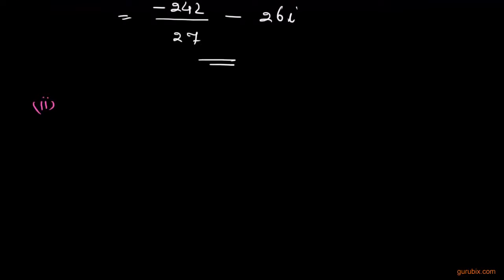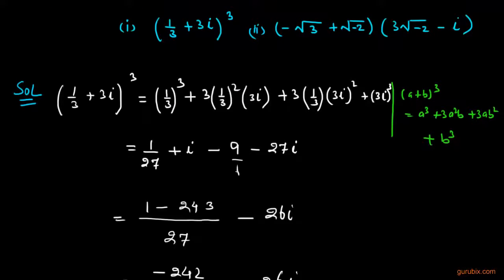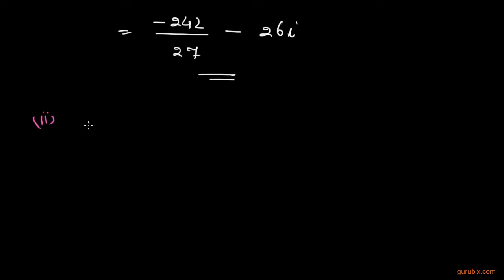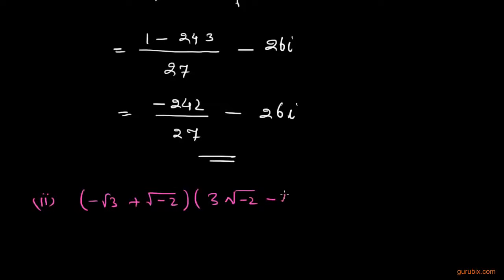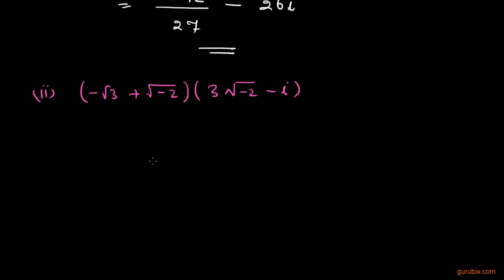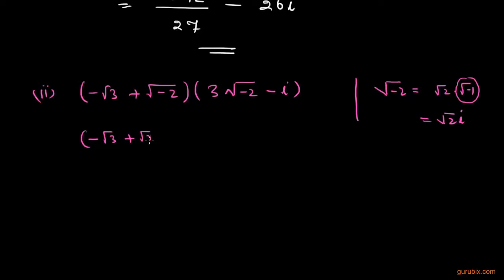Now we move to part 2. In part 2 we are given the expression: negative root 3 plus square root of negative 2, multiplied by negative root 3 plus square root of negative 2, multiplied by 3 times square root of negative 2 minus iota. We know that square root of negative 2 equals square root of 2 times square root of negative 1, which equals square root of 2 times iota. So the terms become: negative root 3, plus root 2 iota, and 3 root 2 iota, and iota respectively.